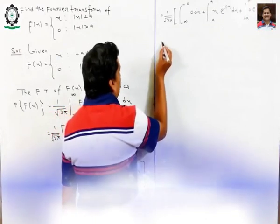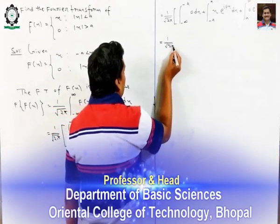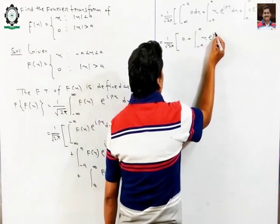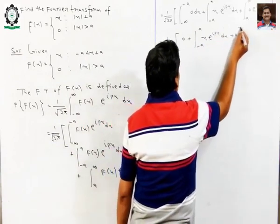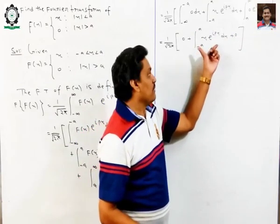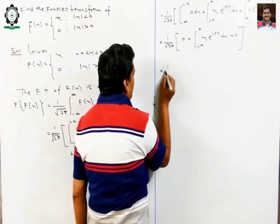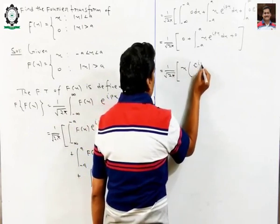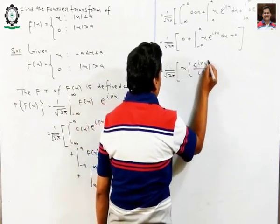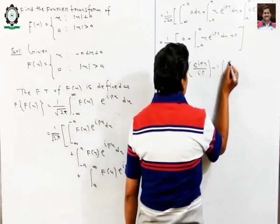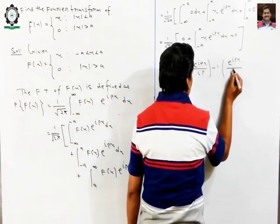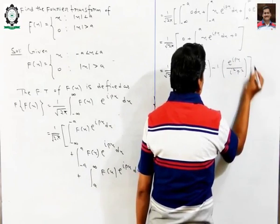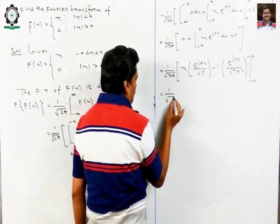So overall we have: F(p) equals 1 over root 2π. This is 1 over root 2π.